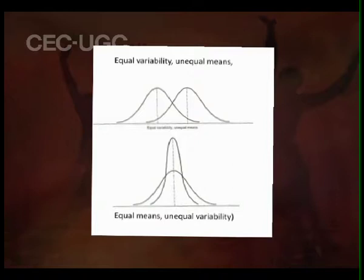In this diagram, you will see unequal means but equal variability, and in the second diagram you will see the same mean but unequal variability. Measures of variability is the key structure of statistics and all types of inferential statistics depend on these measures of variability.